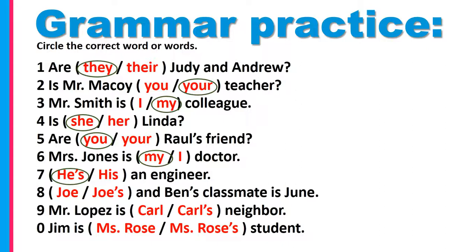Number eight: Joe or Joe's and Ben's classmate is June. Yes, it is Joe – Joe and Ben's classmate is June. Number nine: Mr. Lopez is Carl's neighbor. We need possession – Carl's neighbor, the neighbor of Carl. And number ten: Jimmy's – Miss Rose's student.